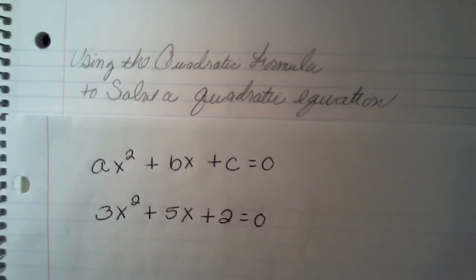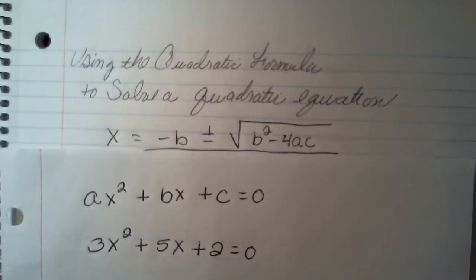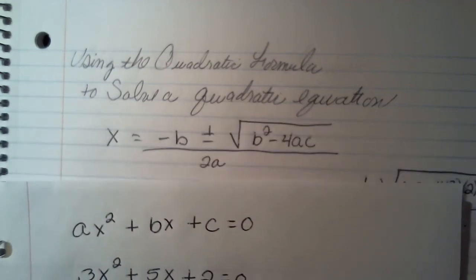The next thing that we need is we need to know what the quadratic formula is. The quadratic formula is simply x equals negative b plus or minus the square root of b squared minus 4ac over 2a.